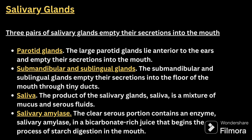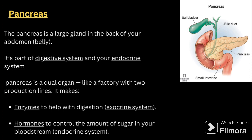We have three pairs of salivary glands that empty their secretions into the mouth: the parotid gland, submandibular gland, and sublingual gland. The parotid glands are the largest, lying anterior to the ears. The submandibular and sublingual glands empty their secretions into the floor of the mouth through tiny ducts. Saliva, the product of the salivary glands, is a mixture of mucus and serous fluid. Salivary amylase is an enzyme in a bicarbonate-rich juice that begins the process of starch digestion in the mouth.